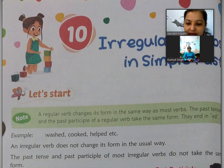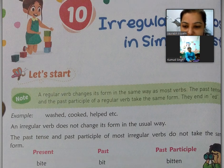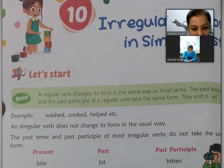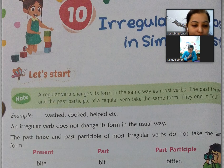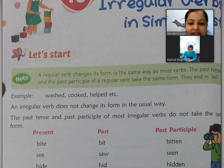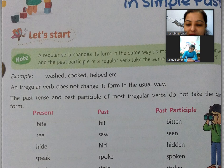Now we will study about verbs. A regular verb changes its form in the same way as most verbs. The past tense and past participle of a regular verb take the same form. They end in -ed. Regular verb woh sentence ke according apne form ko change karte hain. Past me bhi change ho jata hai, past participle me bhi. Mostly words end hote hain -ed ke sath. Jaise wash hai — wash normal verb hota hai, isko agar hum past karenge toh -ed ho jayega.